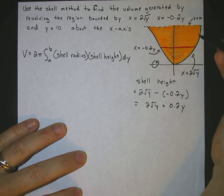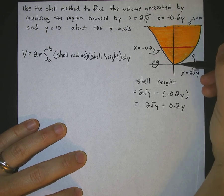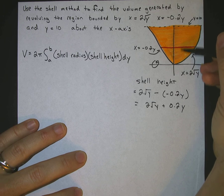Your shell radius, it's just your arbitrary distance from your axis of rotation. Your axis of rotation, here's your x-axis. So how far is this red line to the x-axis? Well, we just drew a random red line there,